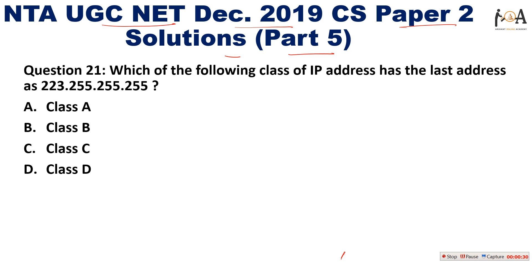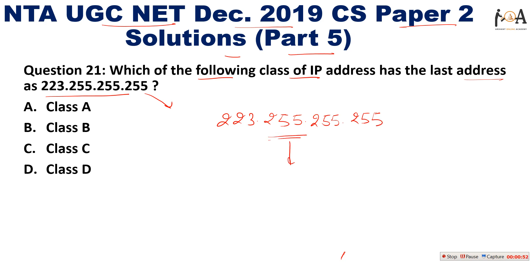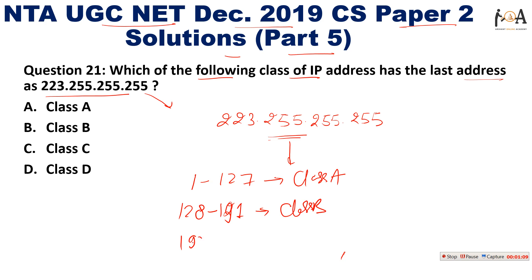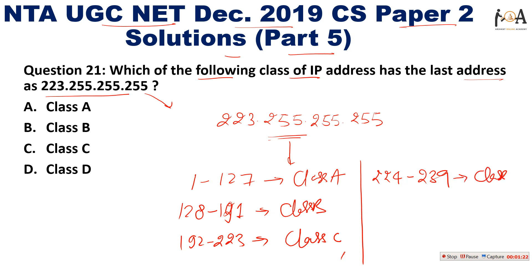Question number 21: which class of IP addresses has the last address 223.255.255.255? You all know that the range 1 to 127 is classified as Class A, from 128 to 191 is Class B, from 192 to 223 is Class C, from 224 to 239 is Class D, and from 240 to 255 is Class E.